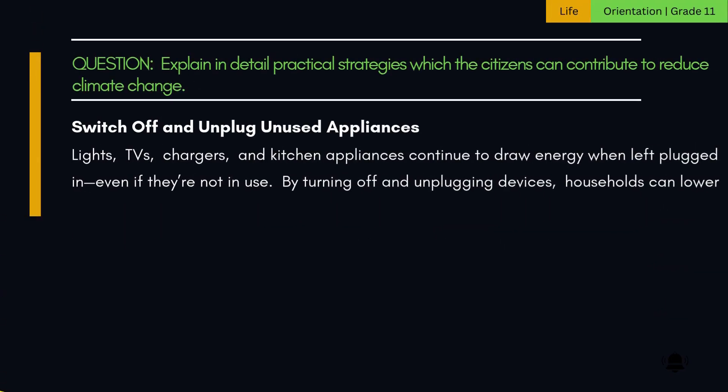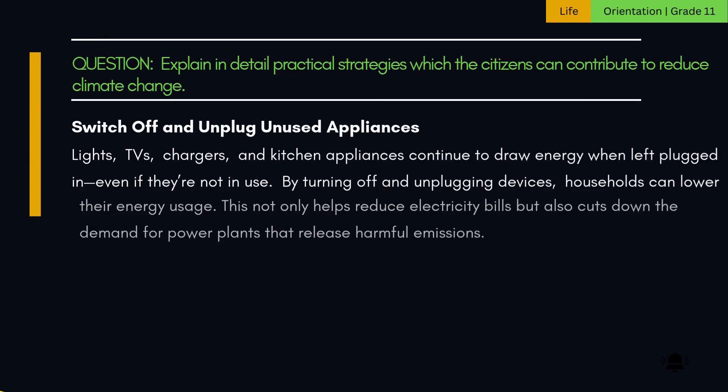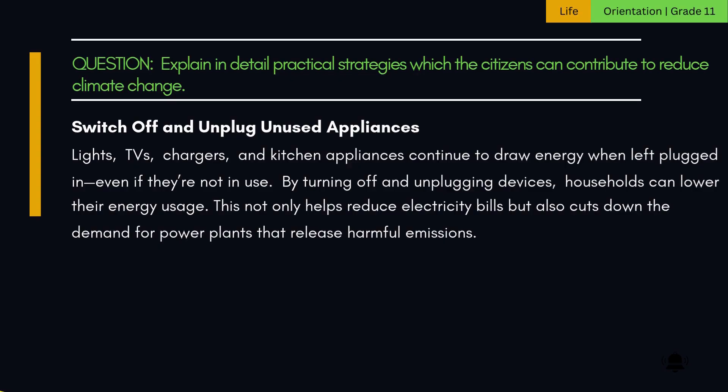10. Switch off and unplug unused appliances. Lights, TVs, chargers, and kitchen appliances continue to draw energy when left plugged in, even if they are not in use. By turning off and unplugging devices, households can lower their energy usage. This not only helps reduce electricity bills, but also cuts down the demand for power plants that release harmful emissions.